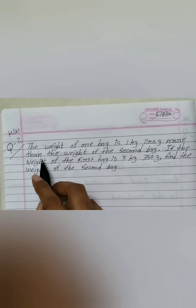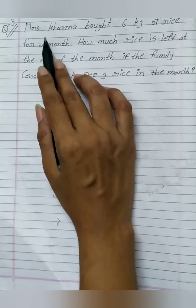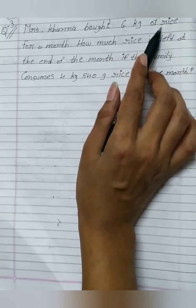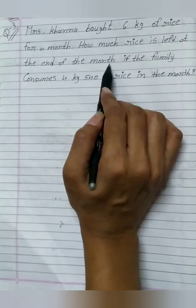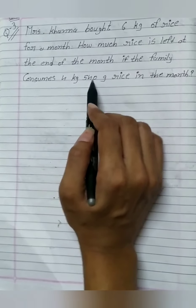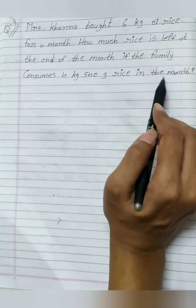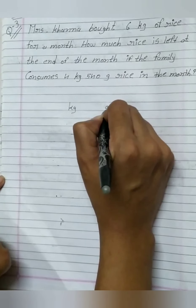Question number 3. Mrs. Khanna bought 6 kg of rice for a month. How much rice is left at the end of the month if the family consumes 4 kg 540 gram rice in the month? First of all we write down the kg and gram.